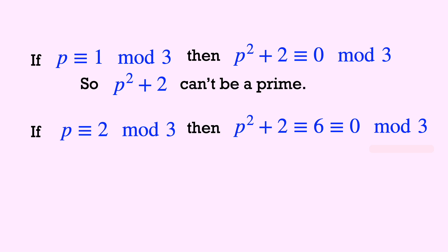Next, if p is congruent to 2 mod 3, meaning it leaves a remainder of 2, then squaring it and adding 2 would also give us a number that's a multiple of 3. Well then, it also can't be a prime.